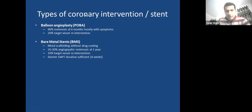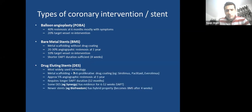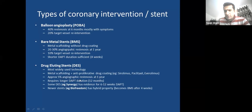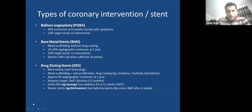Drug-eluting stents, the most widely used technology, have metal scaffolding with anti-proliferative drug coating — most commonly Sirolimus, Paclitaxel, or Everolimus. At one year, there is only 5% angiographic restenosis. They require a longer duration of dual antiplatelet therapy for full endothelialization. Newer stents like Synergy require only 6-12 weeks of dual antiplatelet therapy. BioFreedom hybrid stents act as drug-eluting for the first four weeks, then become bare metal — allowing early cessation or reduction of dual antiplatelet.